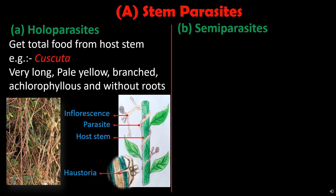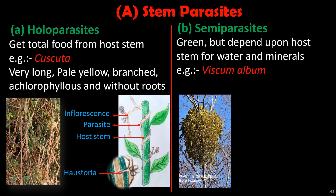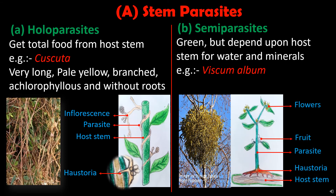The other type of stem parasite is the semi-parasite. These plants are green due to the presence of chlorophyll, meaning they can synthesize organic food themselves, but they depend upon the host stem for water and minerals. Example is Viscum album. This plant parasitizes on a number of shrubs and trees. Shoots of the parasitic plant are attached to the host by means of haustoria. The primary haustoria reach up to the cortex of the host, and give rise to secondary haustoria which make contact with the xylem of the host plant to absorb water and minerals.